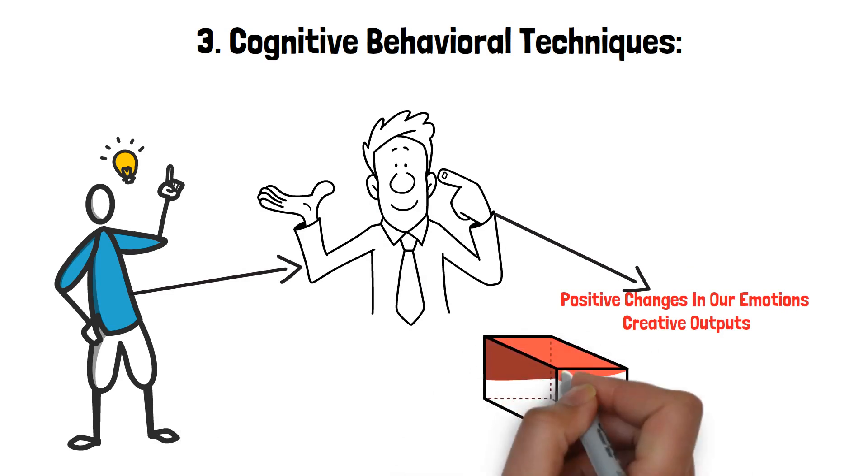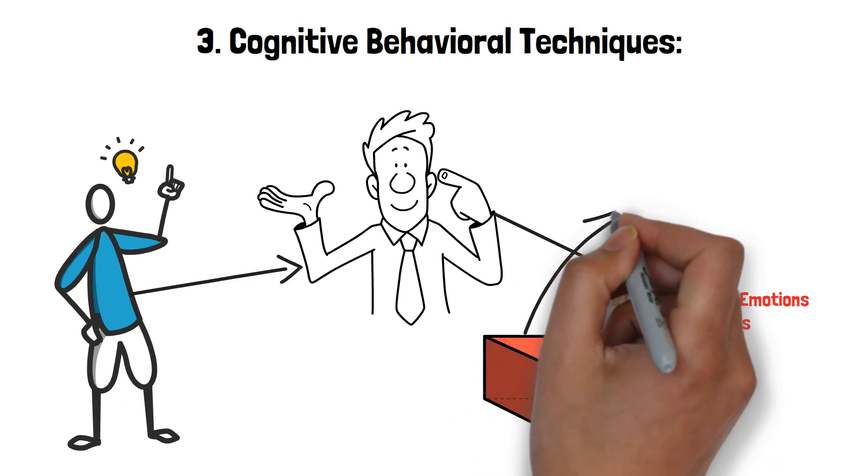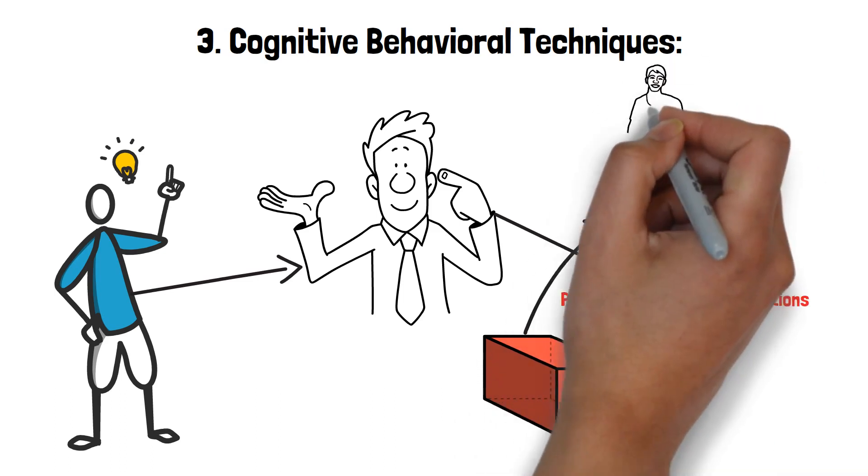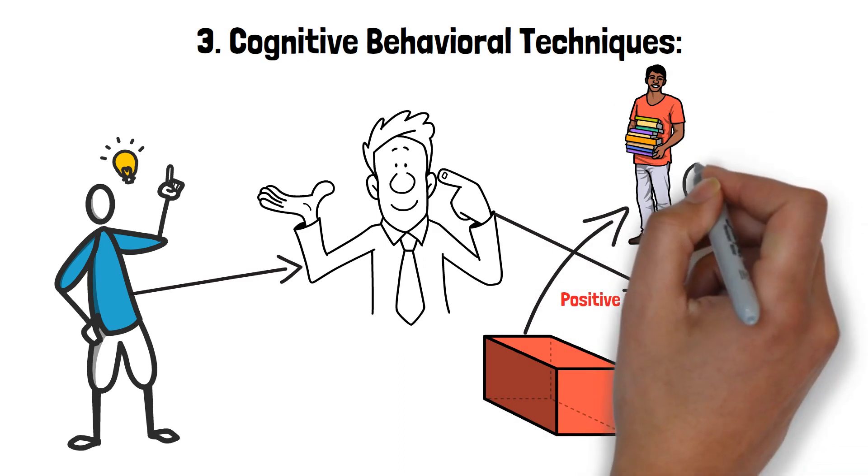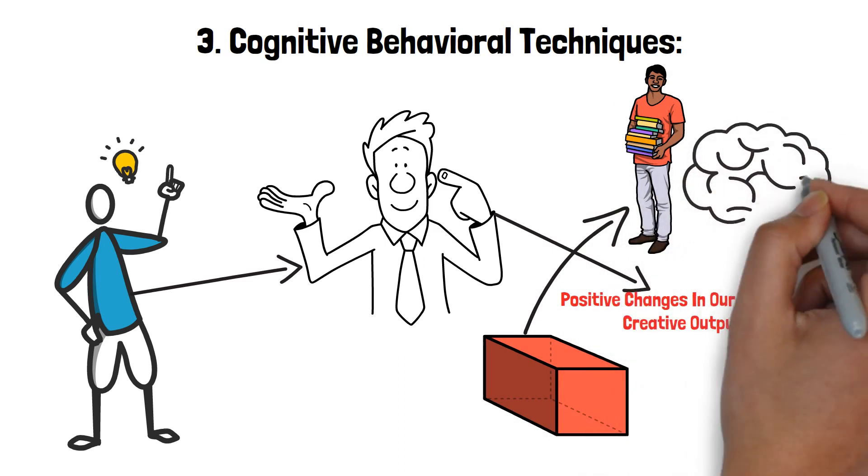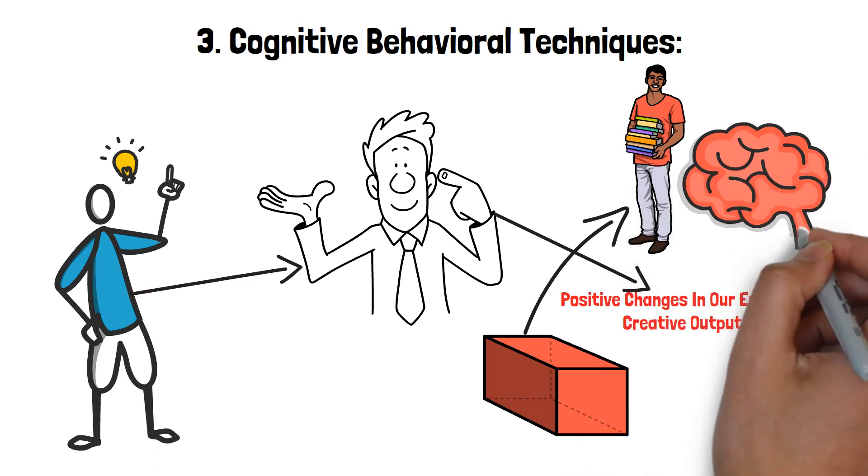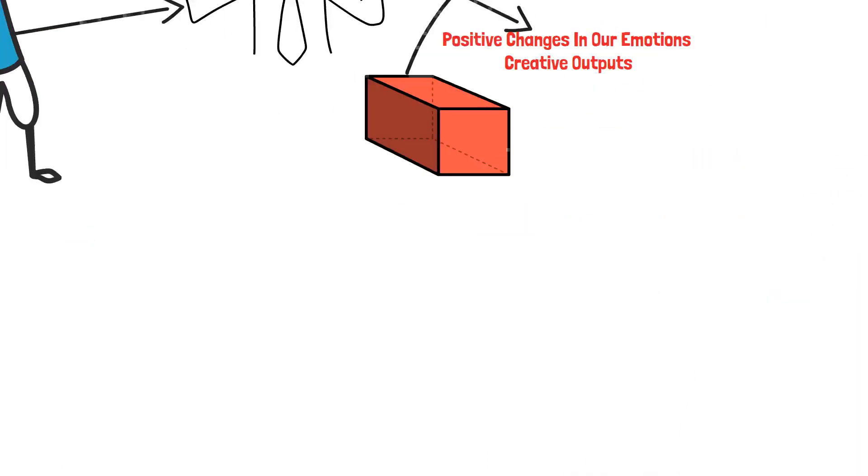One powerful CBT technique is to reframe creative blocks as opportunities. This means shifting your perspective to see a block not as a barrier, but as a chance to learn something new or try a different approach. This shift in thinking opens up your mind to new possibilities and reduces the anxiety and frustration that blocks often bring.